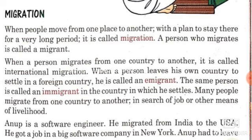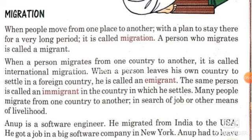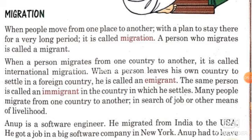Many people migrate from one country to another in search of a job or other means of livelihood. For example, Anoop is a software engineer who is migrating from India to USA for a job in a big company. This is an example of international migration. Another example is of Kanaiya, who belongs to a small village in Uttar Pradesh. Two years ago, he migrated to Delhi in search of a job. This is an example of migration within the same country.